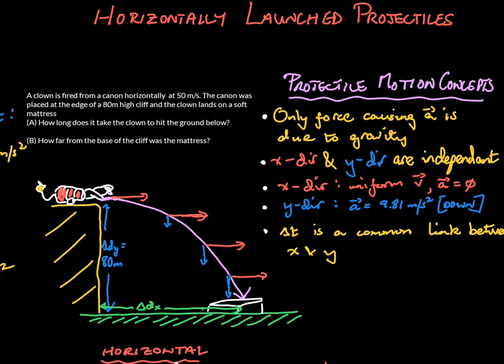Welcome class. Today we're going to focus on a common horizontally launched projectile problem. A clown is fired from a cannon horizontally at 50 meters per second. Precarious job, but a clown's got to make a living.